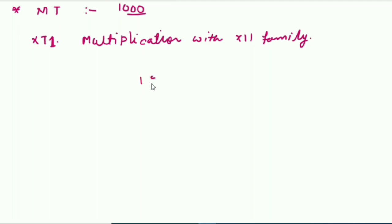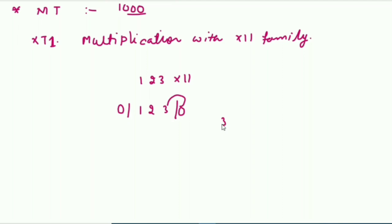Let's say I have the number 123 and I want to multiply it by 11. I place a zero on each side of the number. Then I add sequentially: zero plus three is three, three plus two is five, two plus one is three, and one plus zero is one. So the answer on the screen is 1353.